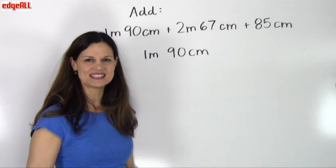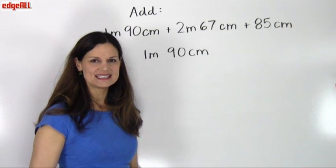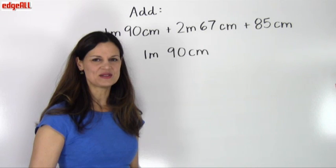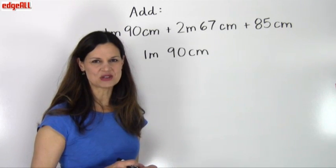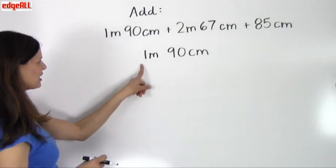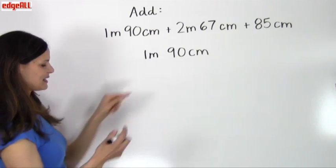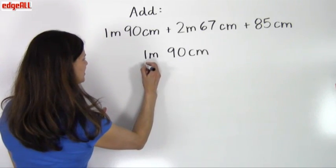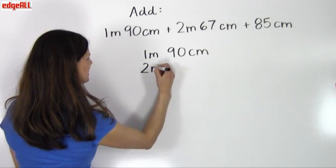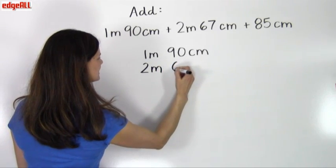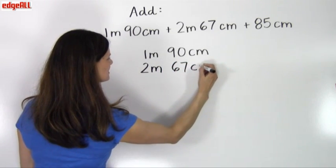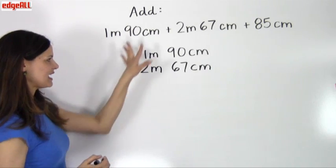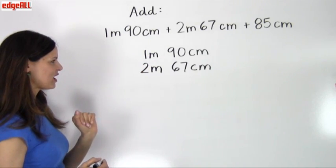So let's begin with step one. Step one, we want to align our measurements vertically. So I'm starting here with my 1 meter 90 centimeters, and I'm going to add 2 meters 67 centimeters.